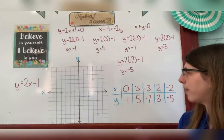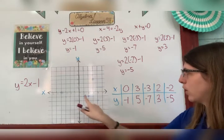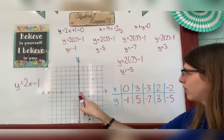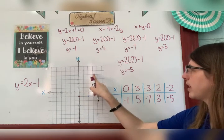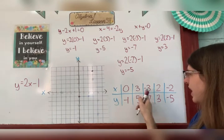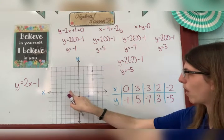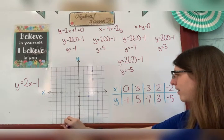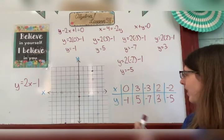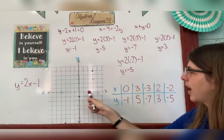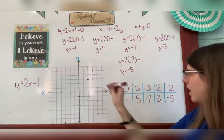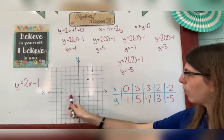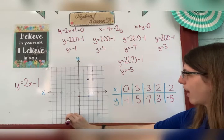Now I'll graph the ordered pairs. My first ordered pair is (0, -1): zero on the x-axis, negative one on the y. Then (3, 5): over to 3, up to 5. Then (-3, -7): over to negative 3, down to negative 7 at the bottom of the board. Then (2, 3): over to 2, up to 3. Then (-2, -5): over to negative 2, down to negative 5.